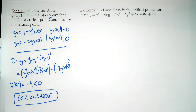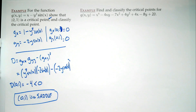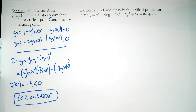Find and classify the critical points of g(x,y) = x⁴ - 4xy - 7x² + 4y² + 4x - 8y + 20. Apparently this was on three final exams within about a four-semester window and students kept getting it wrong. We have new ones now — that's not the reason we kept putting it on.